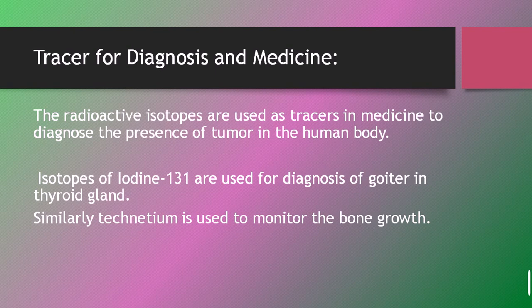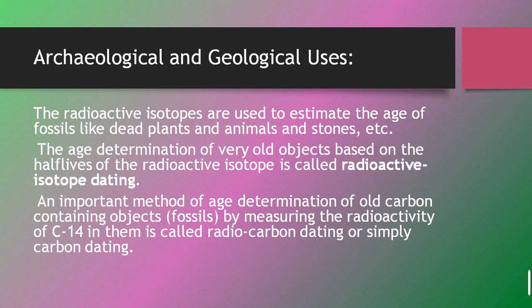For diagnosis and medicine, radioactive isotopes are used as tracers to diagnose tumors in the body. A tumor is a collection of cells that causes disease. Iodine-131 is used for diagnosing and treating goiter in the thyroid gland. Technetium is used for monitoring bone growth — to check whether the bone is growing properly or not.